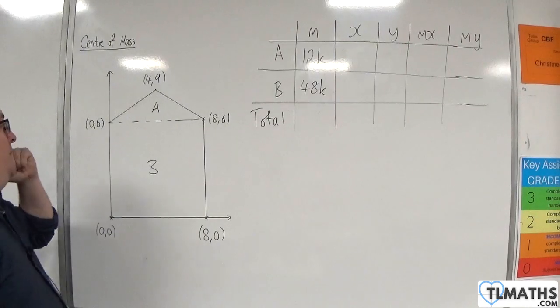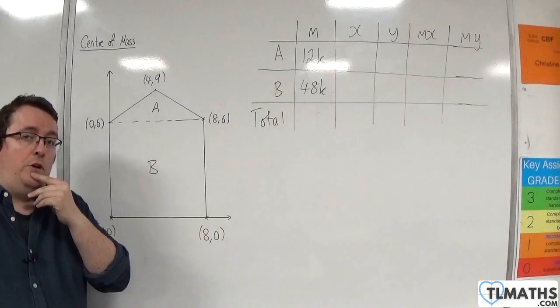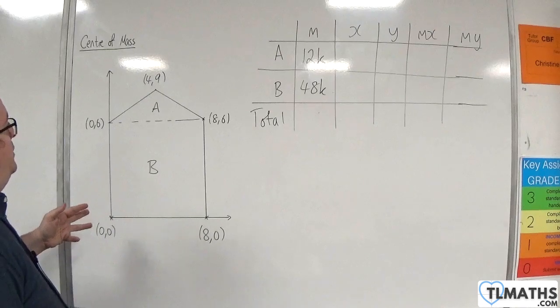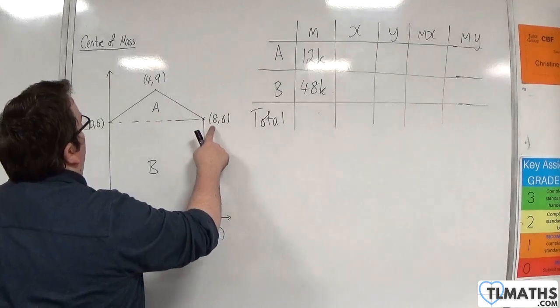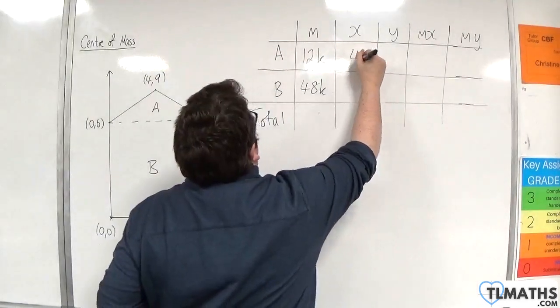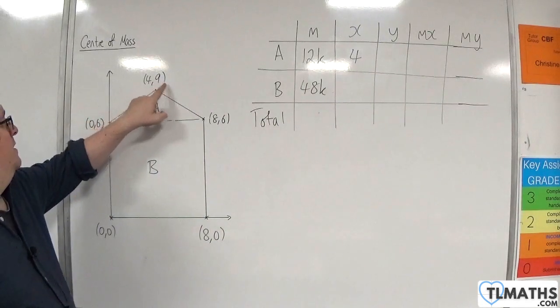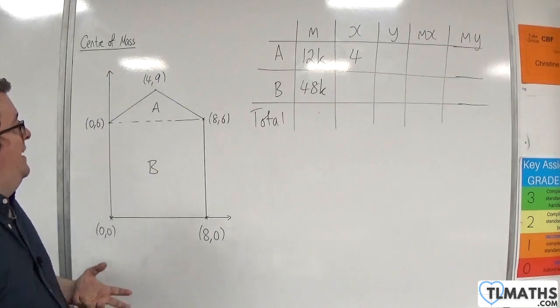The centre of mass of the triangle. Now, I'm going to do it by finding the average of the x-coordinates, the average of the y-coordinates, using the formula we saw in the previous video. So, 0 plus 4 plus 8 is 12, divided by 3 is 4, as we expected. And 6 plus 9 plus 6 is 21, divided by 3 is 7.